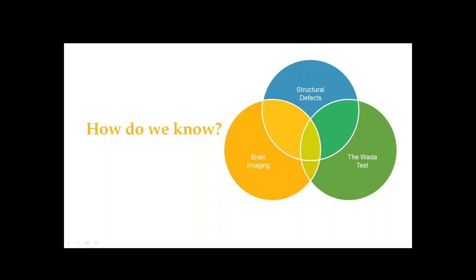The way that we know this is, as we talked about last week, structural defects — any damage to a certain area of the brain — and then looking at what functional abilities are compromised as a result of that part of the brain being injured. Historically, we have learned a lot about what the brain does by examining the brains of individuals who have had a very specific injury.